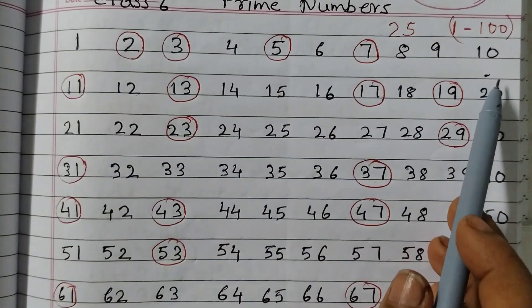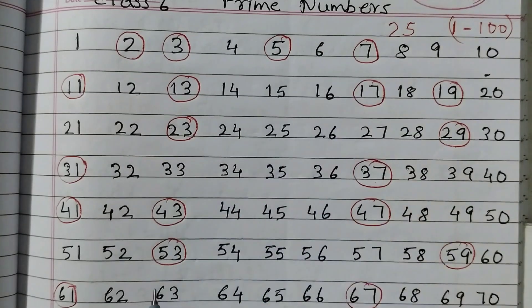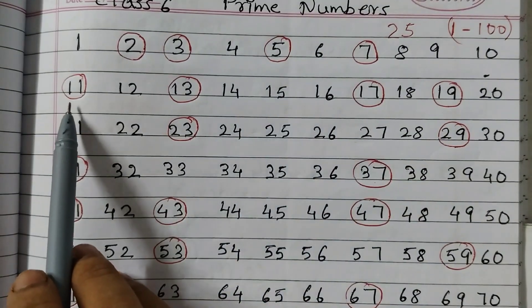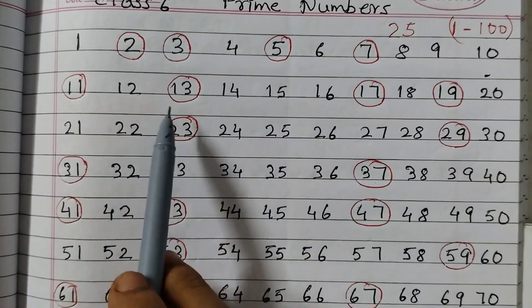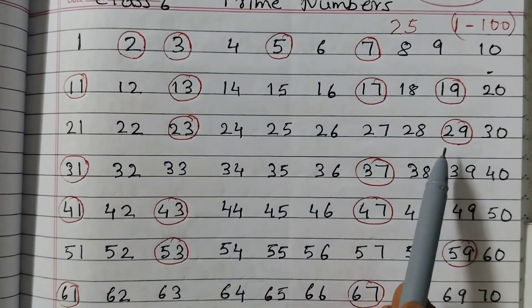First row, that is 1 to 10, is one decade. It has 4 prime numbers. Second decade, that is second row 11 to 20, again has 4 prime numbers.